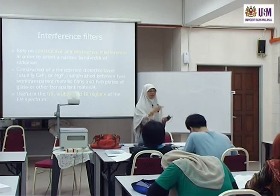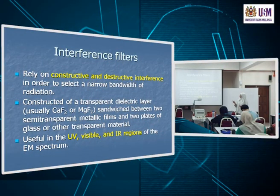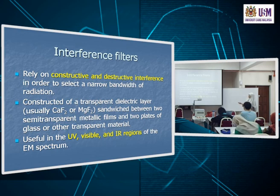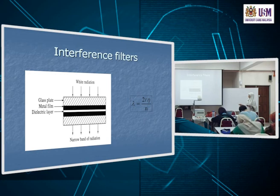The important component in interference filters is a transparent dielectric layer — an example would be calcium fluoride or magnesium fluoride — sandwiched between two semi-transparent metallic films and two outer glass plates. This whole assembly is the interference filter.